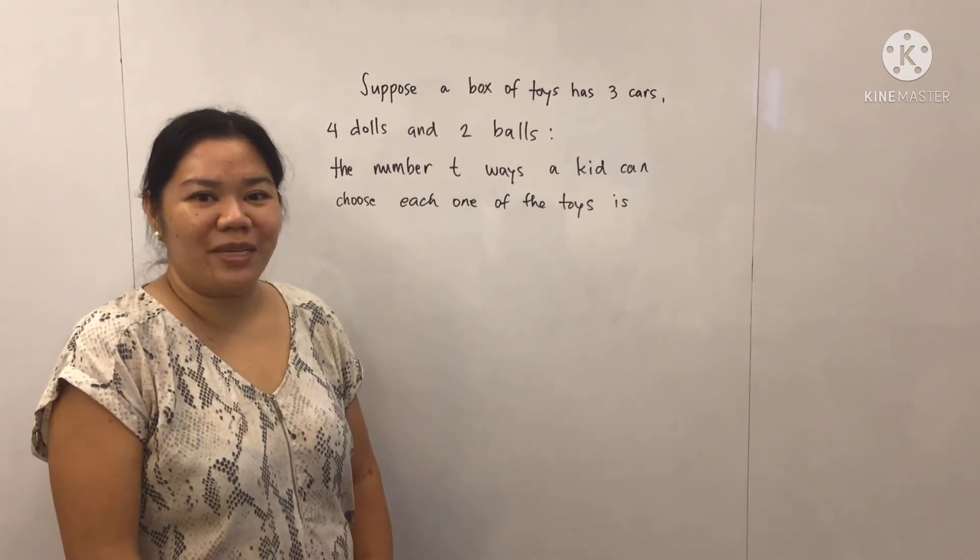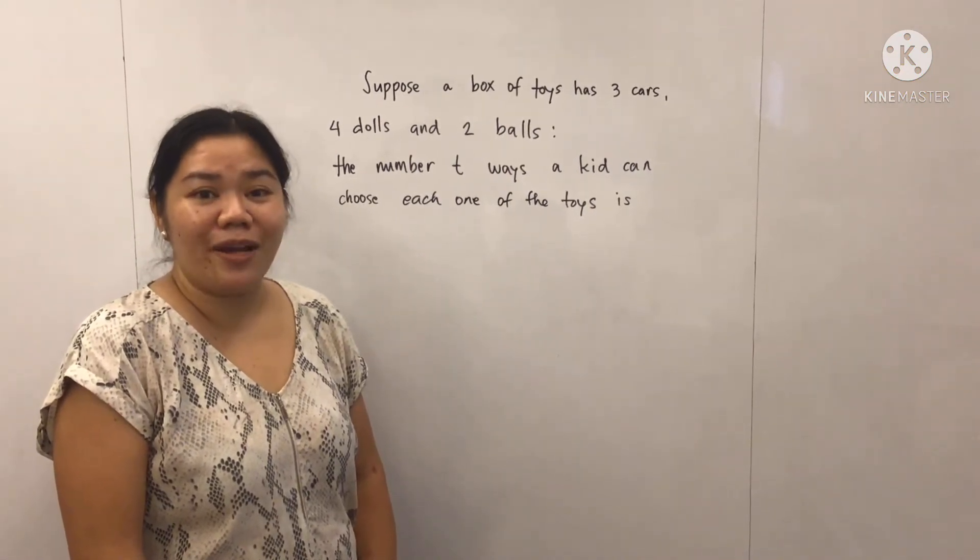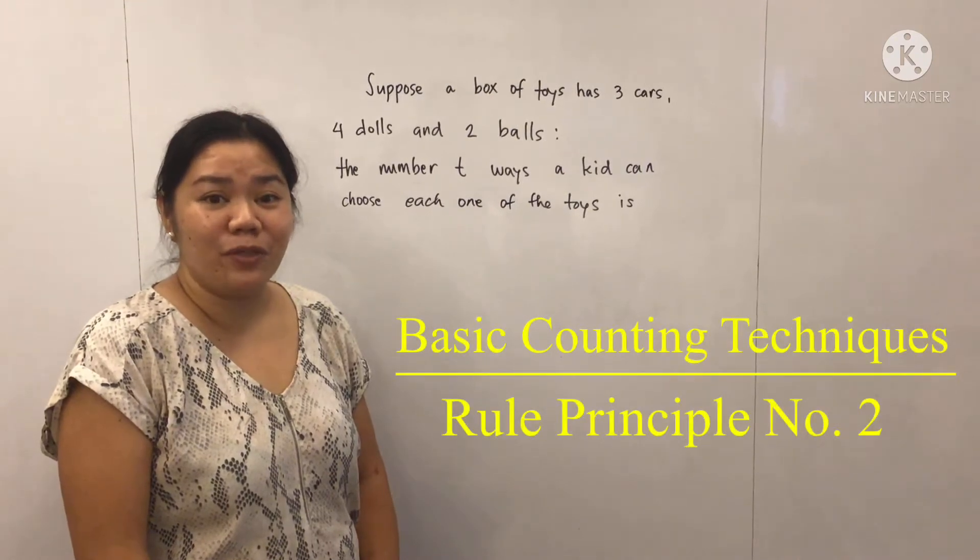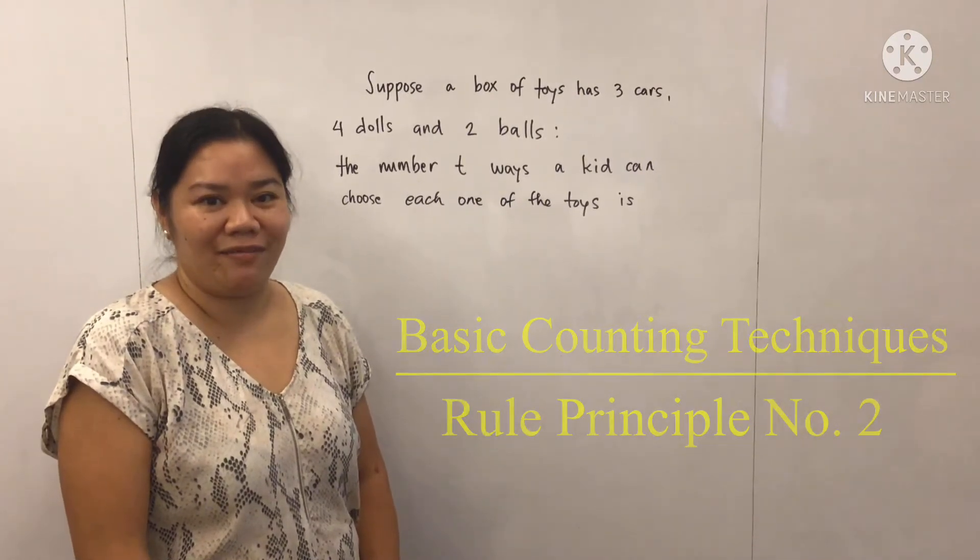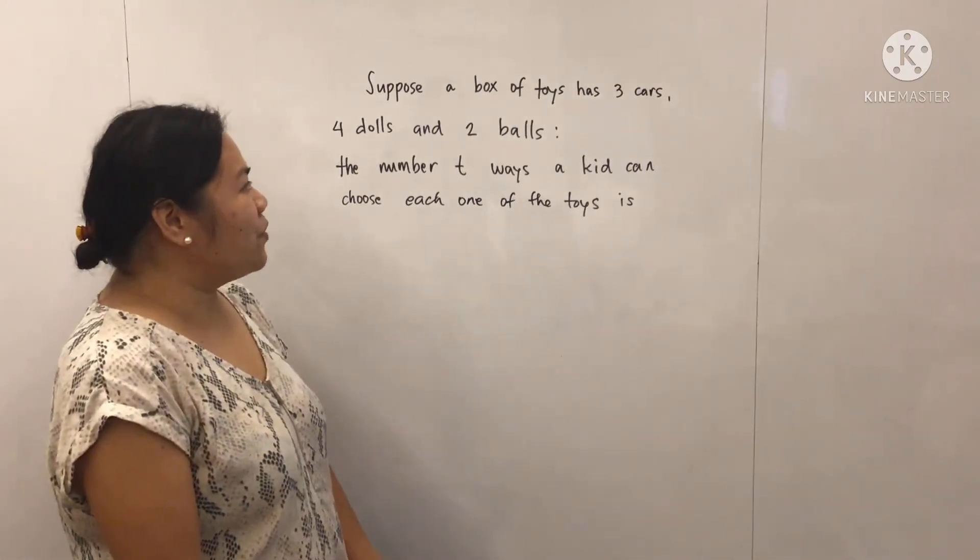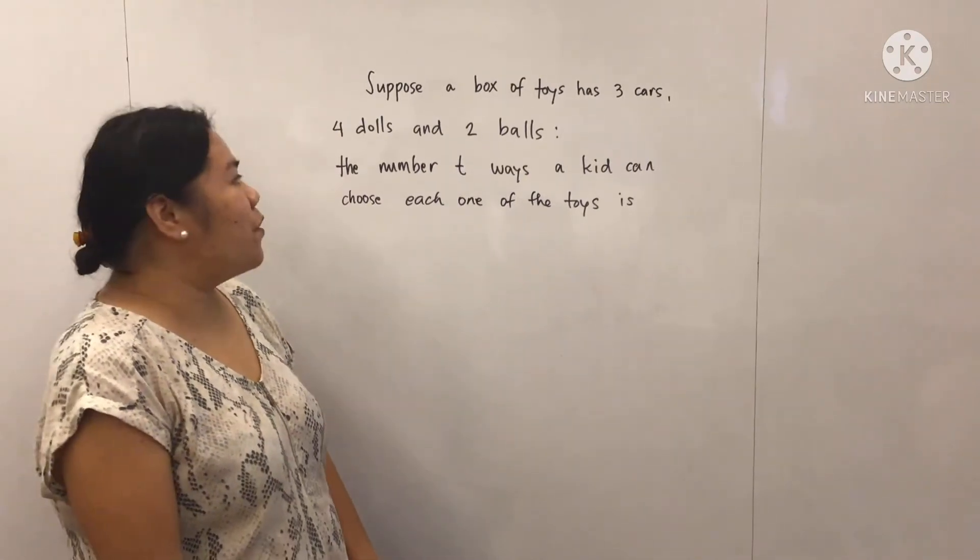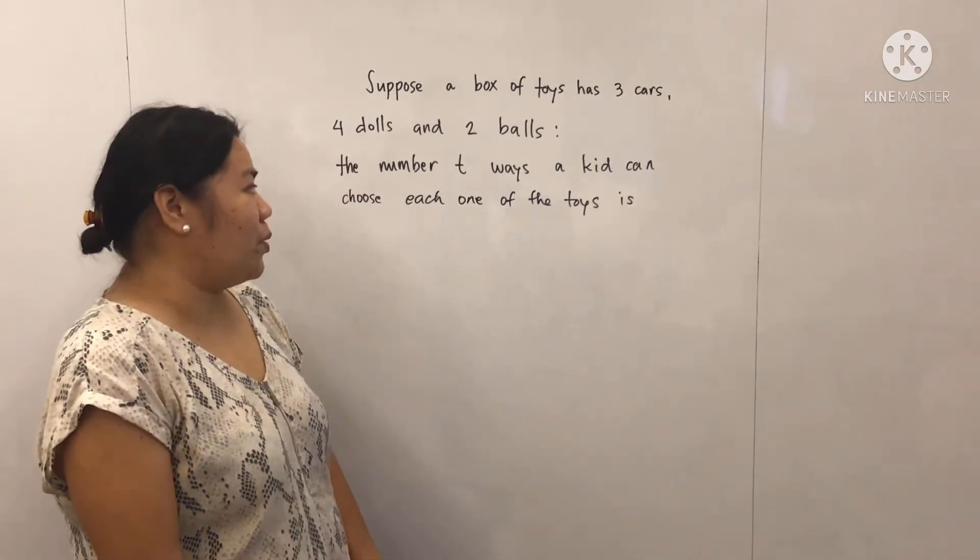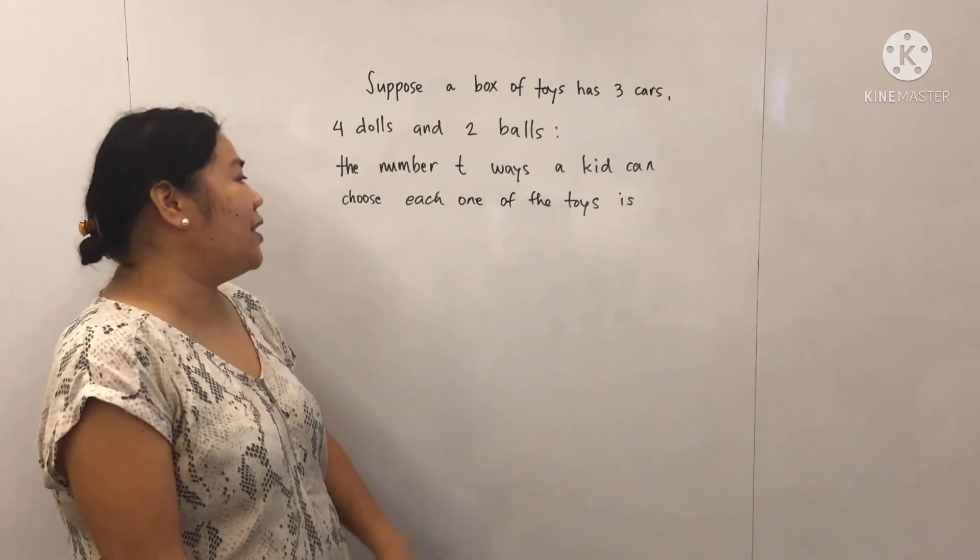Good day everyone, welcome to my channel. Today let's look at rule principle number two of the basic counting technique. Suppose a box of toys has three cars, four dolls, and two balls. The number of ways a kid can